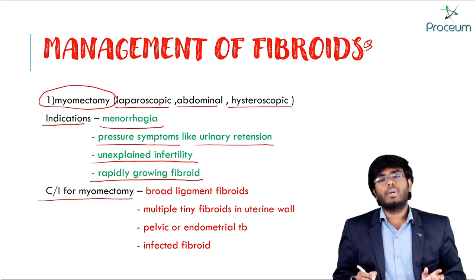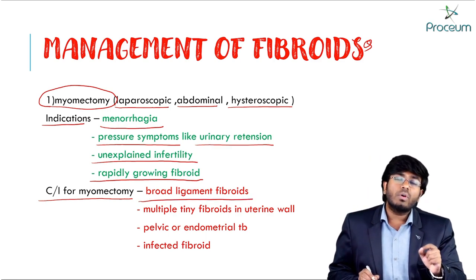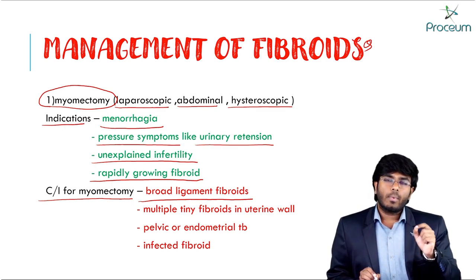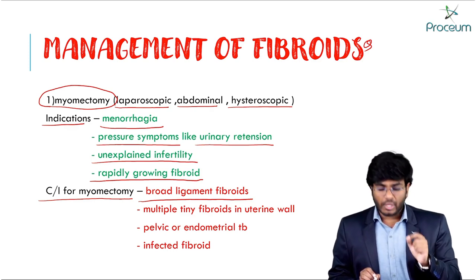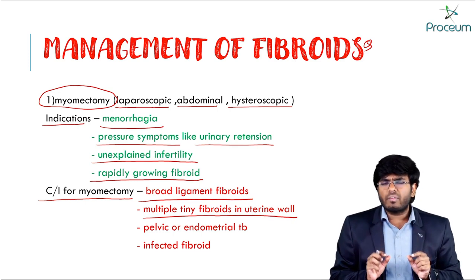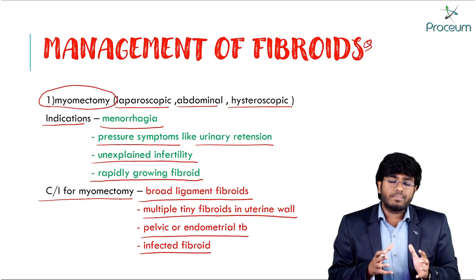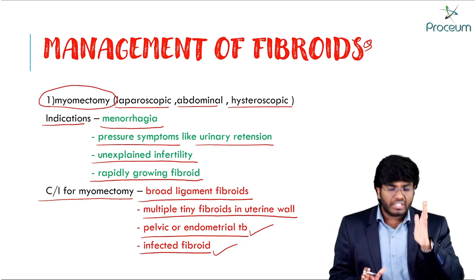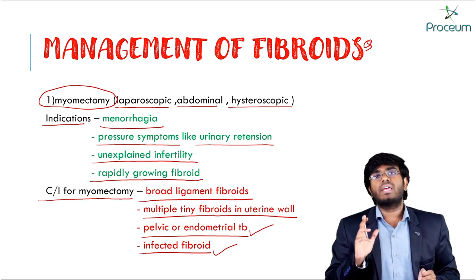Contraindications to myomectomy include broad ligament fibroids (due to proximity to uterine artery and ureter — do hysterectomy instead), multiple tiny scattered fibroids throughout the uterine wall, and active pelvic or endometrial TB or infected fibroids — treat the infection first with antibiotics, then consider surgery.